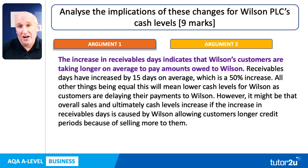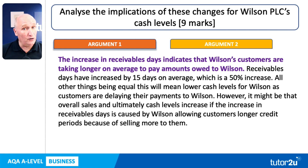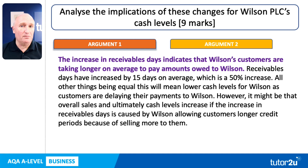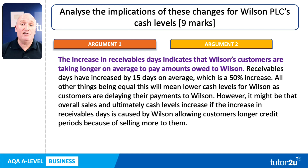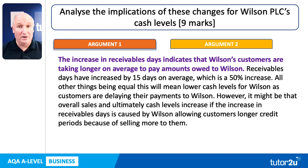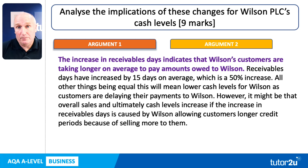That would probably be enough, but you could also potentially develop this analysis further. However, it might be that overall sales and ultimately cash levels could increase if the increase in receivables days is caused by Wilson allowing customers a longer credit period — more trade credit — in return for buying more from us. So actually, in the longer term, it could mean higher cash levels because we're selling more. We don't know that, but that's one possible implication for cash levels.